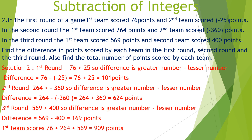The first team's total score is 76 plus 264 plus 569, which equals 909 points. The second team's total score is minus 25 plus minus 360 plus 400, which comes out to be 15 points.